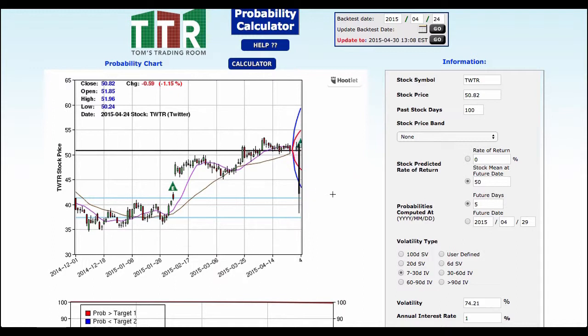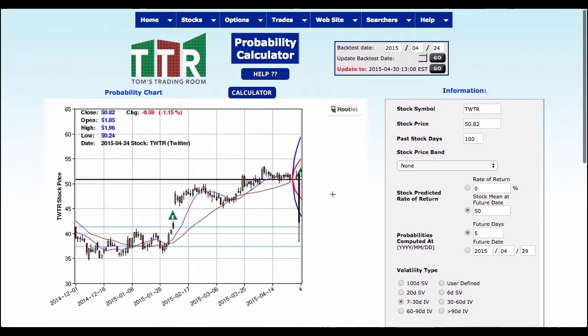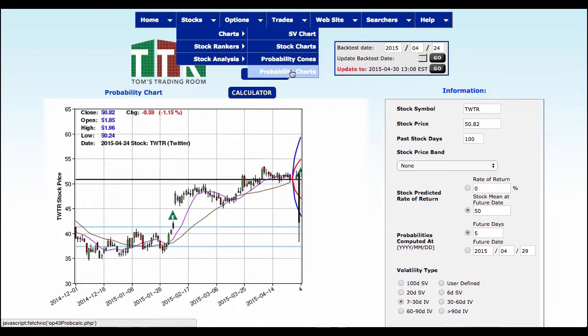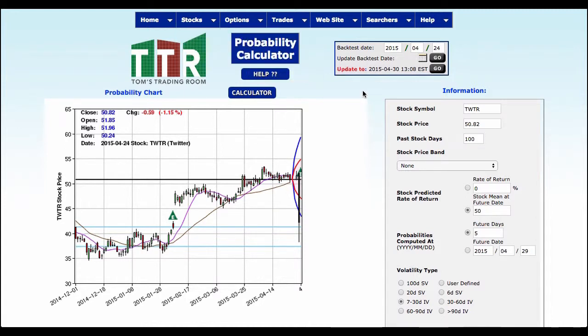So do options allow traders to have some sort of a predictive ability to where an earnings report may lead the stock in the future? Yes, to some degree they do. Does it work 100% of the time? No. How can you find this information out? This is one way of doing it by using the stock charts area and moving to charts, probability cones, and probability charts. Hope you found this video not only entertaining but educational and we got more coming your way. Thanks for joining me.